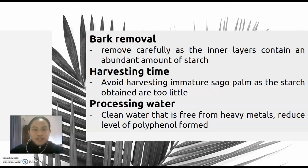Second is harvesting time. Avoid harvesting immature Sago palm, as the starch grains obtained are too little. When the leaf inflorescence first starts to develop at its rising stage, the Sago palm is considered to be matured near the flower initiation. Next is processing water. Clean water that is free from heavy metals such as iron and copper should be used to reduce the level of polyphenol formation. These heavy metals can promote the oxidation of polyphenols that are usually present in the bole, which can discolor the starch.